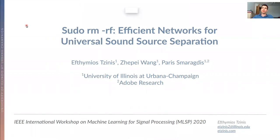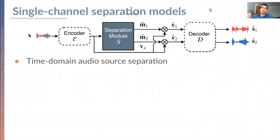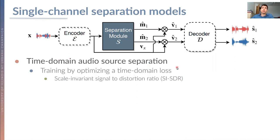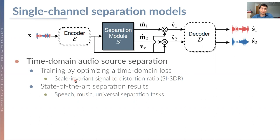Hello everyone. Today I'm going to present our work about efficient networks for universal sound separation and the network we propose called SudoRaMRF. This is a joint work with my lab mate Jeppe and my advisor Paris Maragos. In single-channel separation models, the goal is to take as input a mixture and extract the individual sources that consist in this mixture. Recent architectures perform time-domain audio source separation and are trained by optimizing a time-domain loss, usually the scale-invariant signal-to-distortion ratio. These networks have obtained state-of-the-art results in multiple tasks such as speech, music, or universal sound separation.